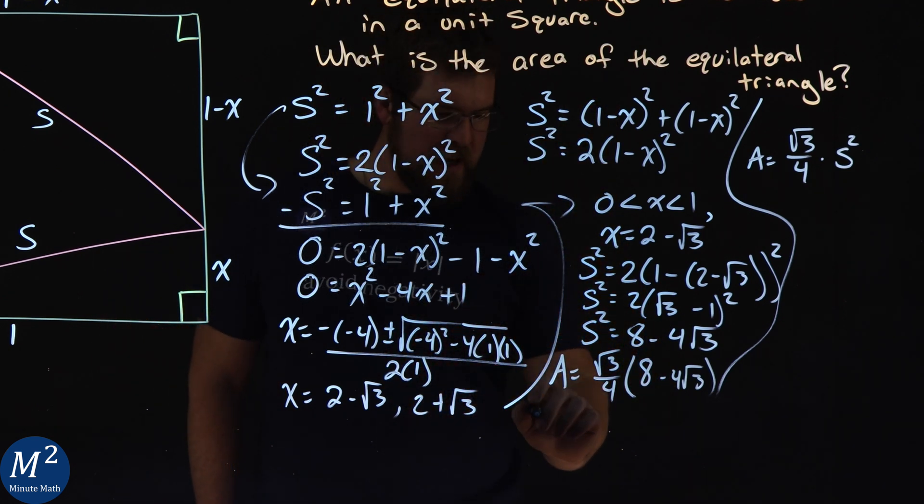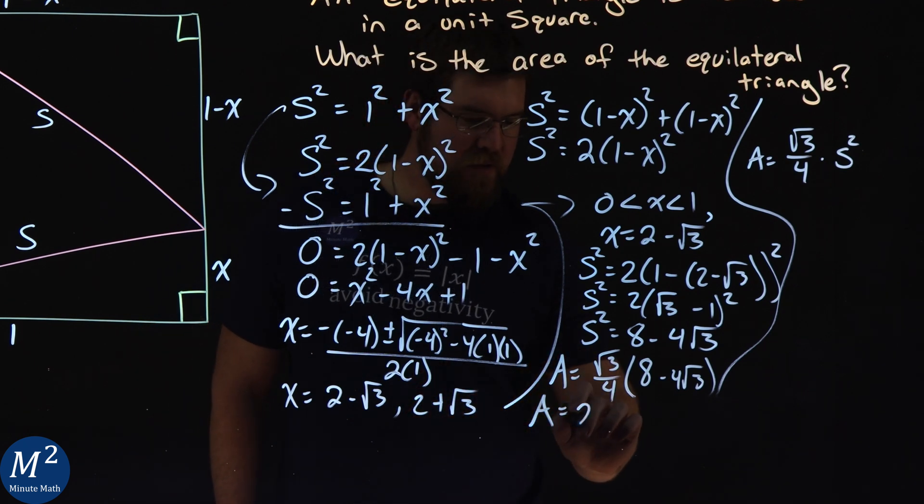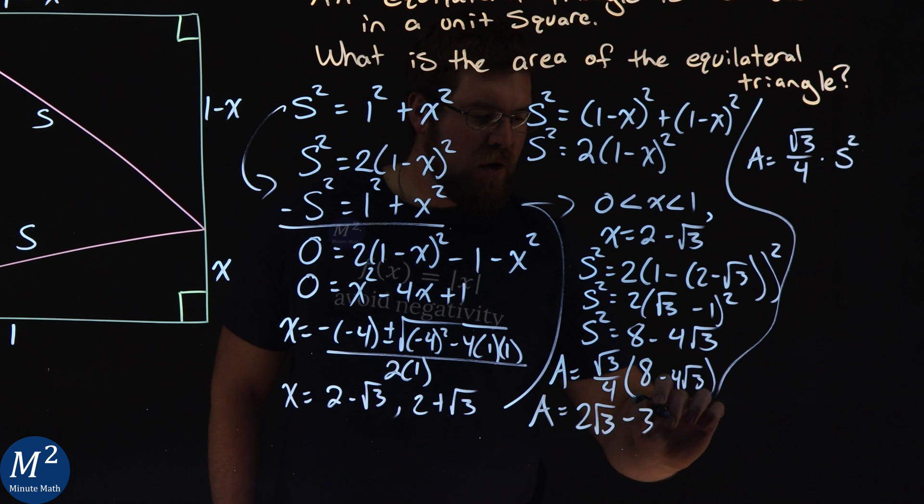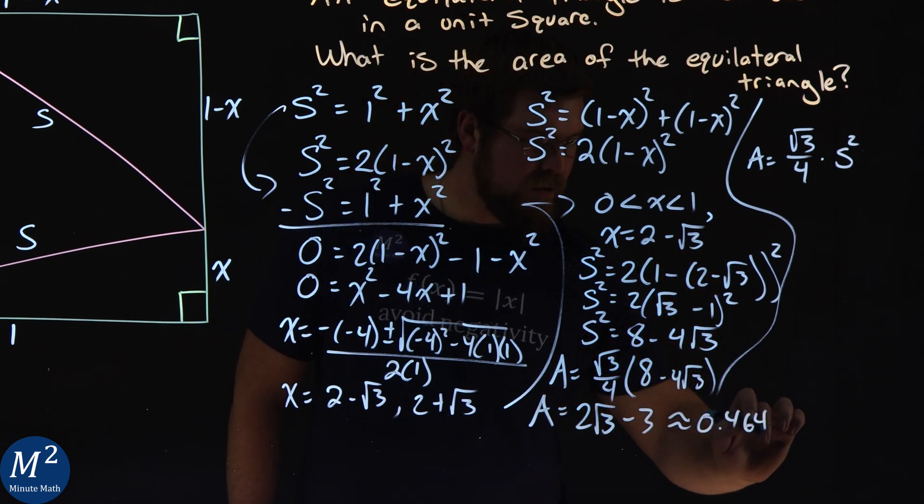So then we can simplify this. And I did that again for you. And the area simplifies to be 2 square root of 3 minus 3, or approximately 0.4641.